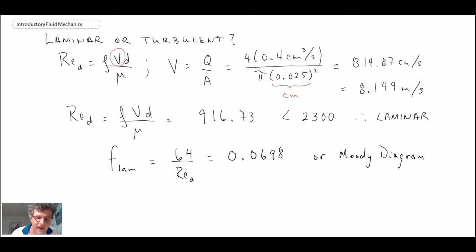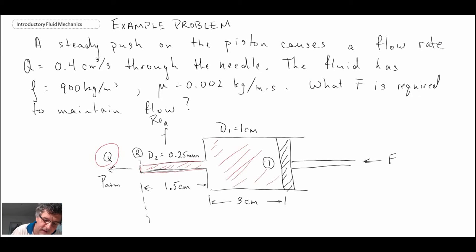Once we have the friction factor, we take that and feed it into the Darcy-Weisbach equation, which will tell us what the head loss is in this section of the syringe: h_f,lam = f(L/D)(V²/2g). We get a number of 14.18 meters.